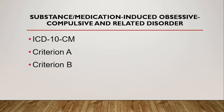So ICD-10-CM coding: the code depends on whether or not there is a comorbid substance use disorder present for the same class of substance. An additional separate diagnosis of substance use disorder is not given. If a mild substance use disorder is comorbid with the substance-induced obsessive compulsive and related disorder, the fourth position character is 1 and the clinician should record mild substance use disorder.